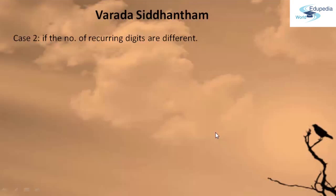Case Number 2 helps you in finding the product if the number of recurring digits either in the multiplicand or in the multiplier are different. And this can be explained through an example. Now let us see how to use Case Number 2 Varda Siddhantam Chudamani Sutra with an example.